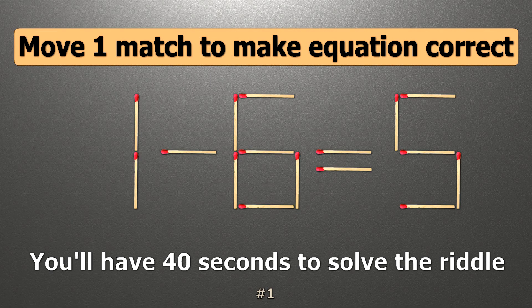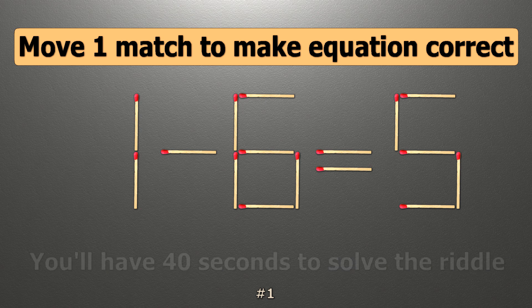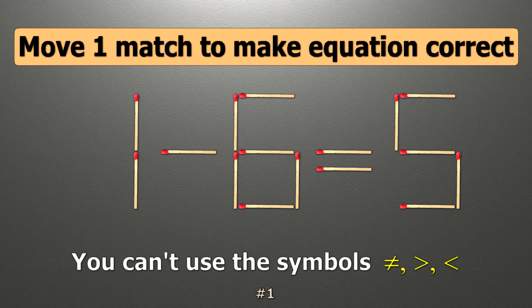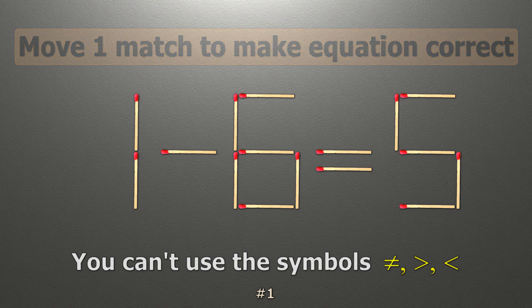We have the equality 1 minus 6 equals 5. Our equality is wrong. We need to move one match to make our equality correct.